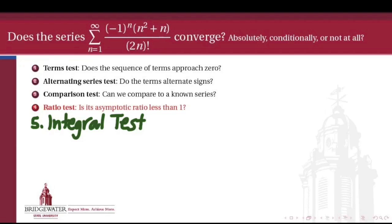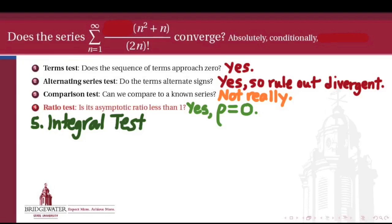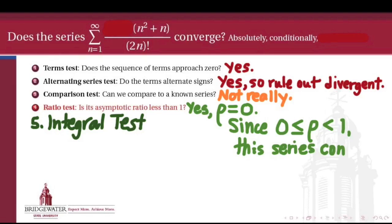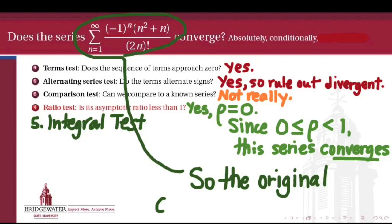To recap: we first applied the terms test — the sequence of terms approaches 0, so we keep going. Then the alternating series test told us the series is at least conditionally convergent since it alternates and its terms go to 0. We took the absolute value of the terms and considered whether a comparison to a known series was convenient — it wasn't, so we passed. We went right for the ratio test, computed the asymptotic ratio to be rho equals 0, and since that ratio is less than 1, the series of positive terms converges. Therefore, our original alternating series converges absolutely.